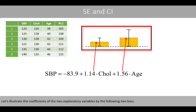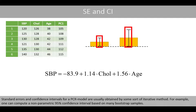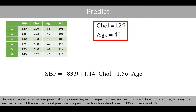Illustrating the coefficients of the two explanatory variables with bars and 95% confidence intervals, we note that standard errors and confidence intervals for a PCR model are usually obtained via iterative methods — for example, a non-parametric 95% confidence interval computed from many bootstrap samples.